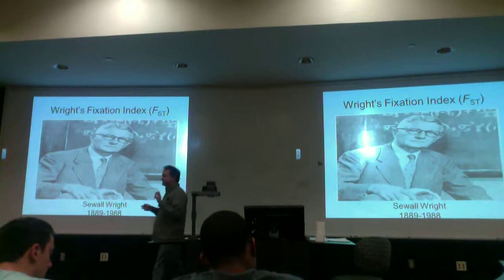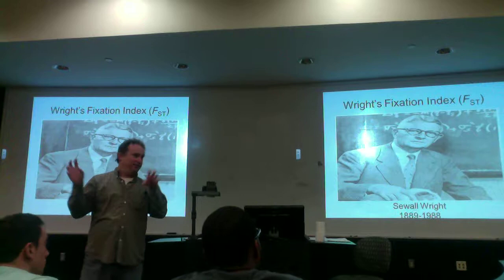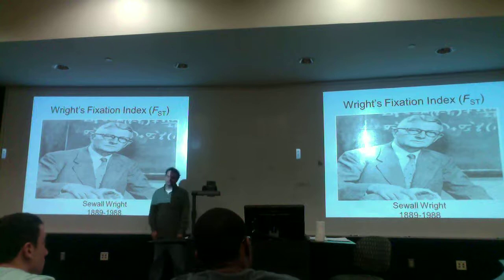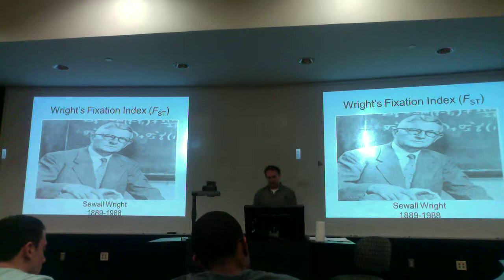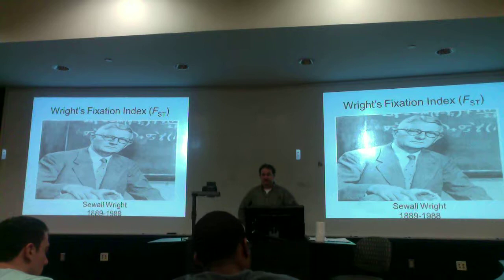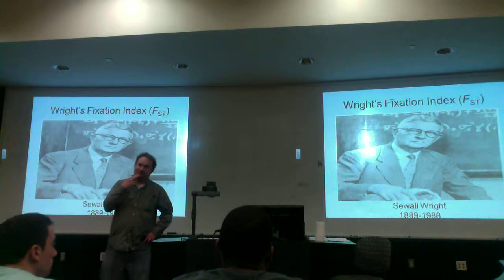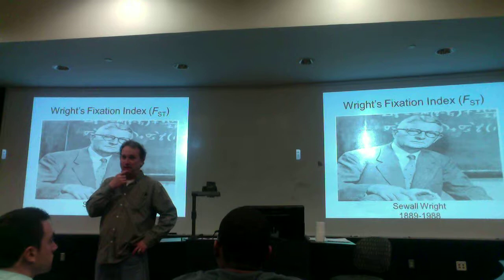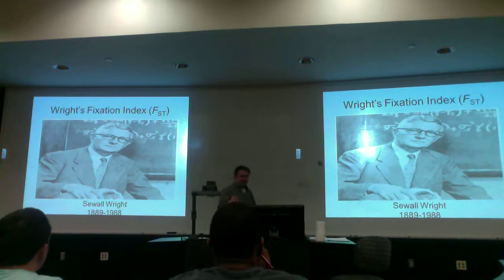So how we quantify the idea of population subdivision — whether it's all a single panmictic population or whether they are separate independent populations — we use this guy's work. Sewall Wright is no longer with us; he was a fixture in evolutionary biology in the early 1900s. We call it Wright's fixation index, sometimes called FST. You also see it as theta-ST or RST, but always ST. FST is a common measure of how subdivided a population is or isn't.